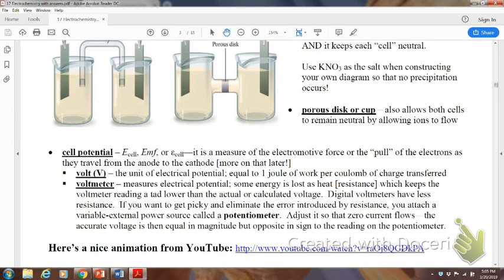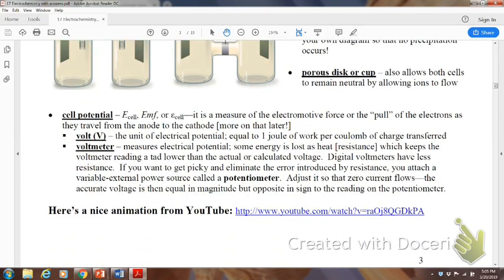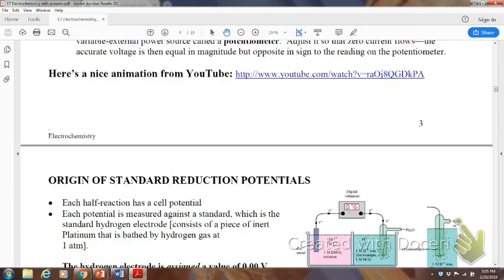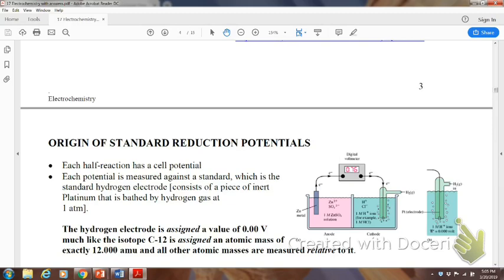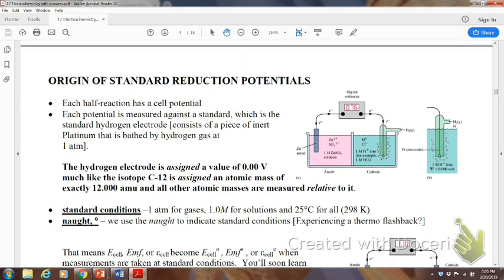Cell potential is the measure of the electromotive force or the pull of the electrons. It's going to be measured in volts and we're going to be using a voltmeter. A volt is 1 joule of work per coulomb, which is going to be important throughout these calculations. And here's your little animation if you want to watch that. And then let's look at this. And then we're going to wrap this up pretty quick and then start another video.